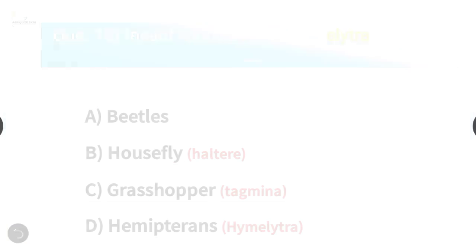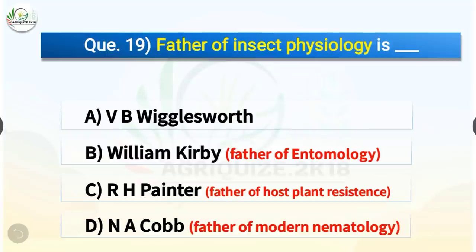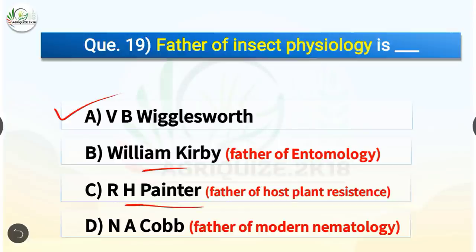Question number 19. Father of insect physiology is who? The options are VB Wigglesworth, William Kirby, RH Painter, or Nacacob. The correct answer is option A, VB Wigglesworth. Father of insect physiology is VB Wigglesworth, whereas father of entomology is William Kirby, father of host plant resistance is RH Painter, and father of modern nematology is Nacacob.